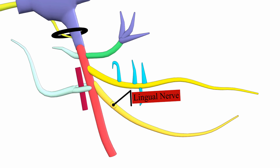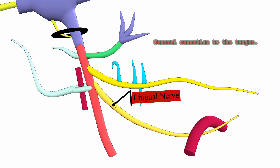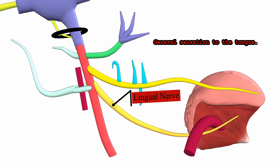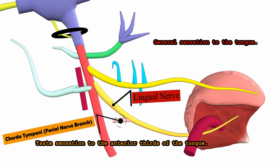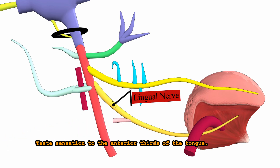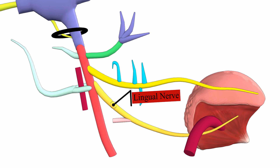The lingual nerve passes medial to the mandible, then shifts medially below the submandibular duct to supply general sensation to the tongue. The chorda tympani, a branch of the facial seventh cranial nerve, unites with the lingual nerve to provide taste sensation to the anterior two-thirds of the tongue. The lingual nerve also supplies the lingual gingiva and carries preganglionic secretomotor fibers to the submandibular and sublingual salivary glands via the submandibular ganglion.